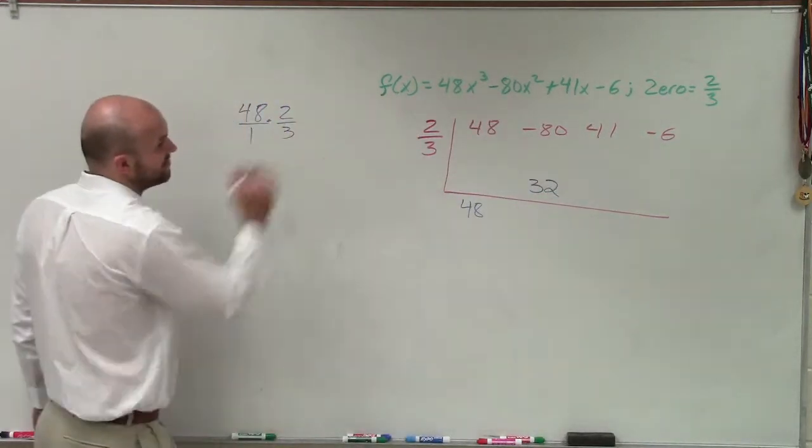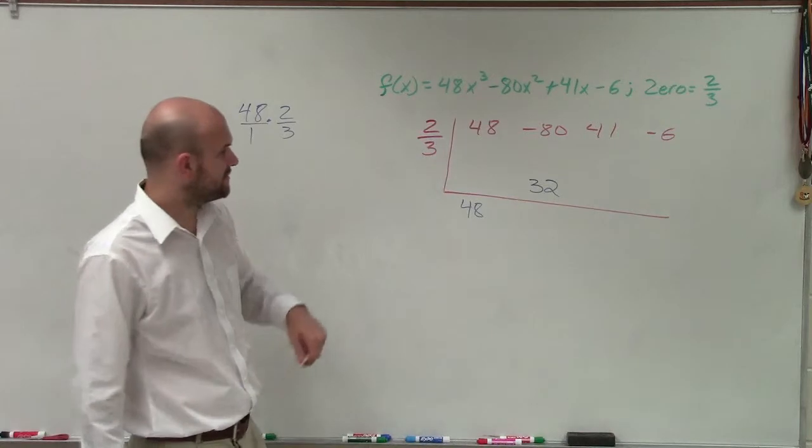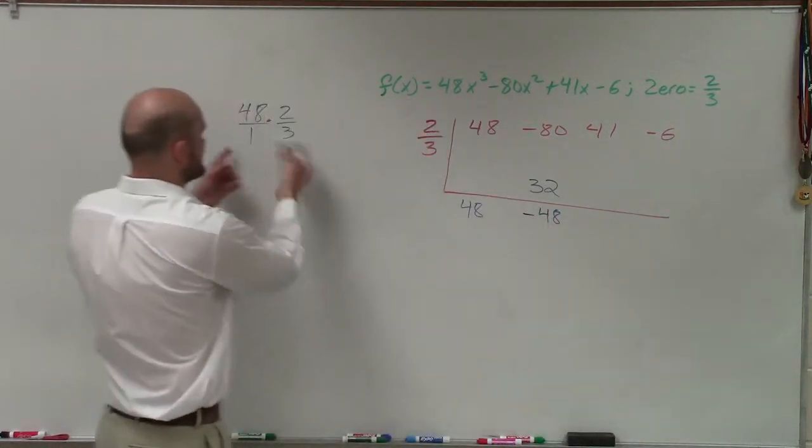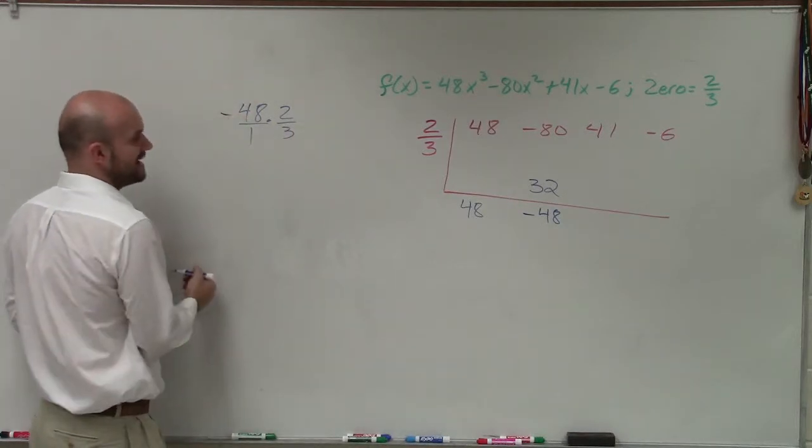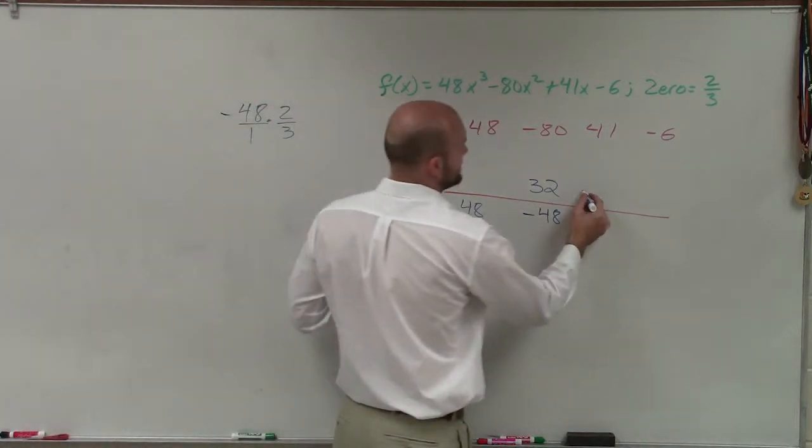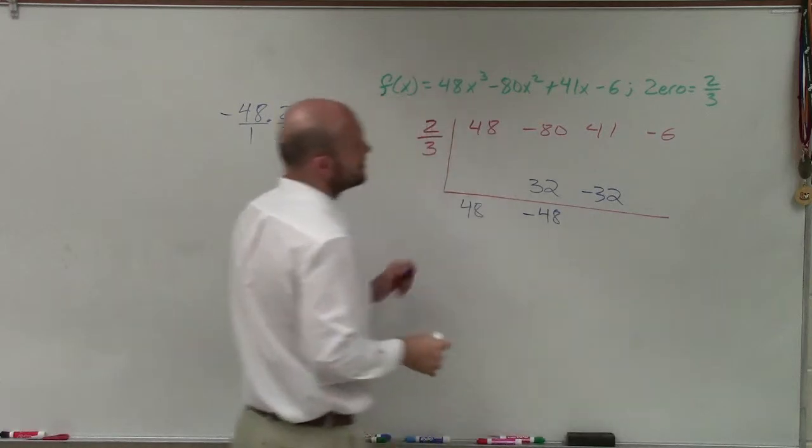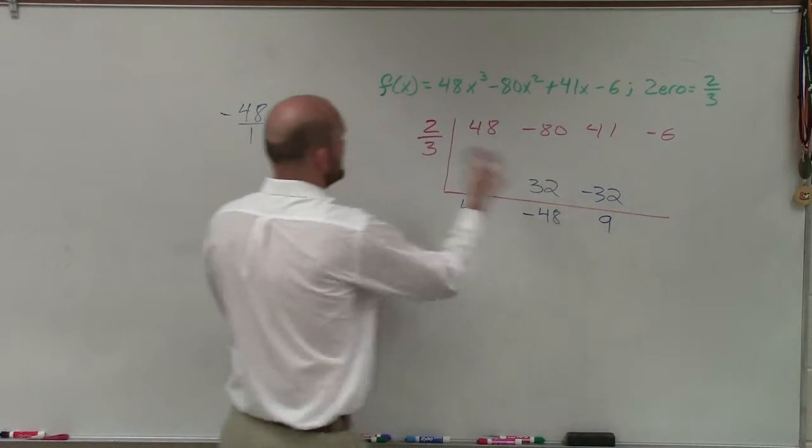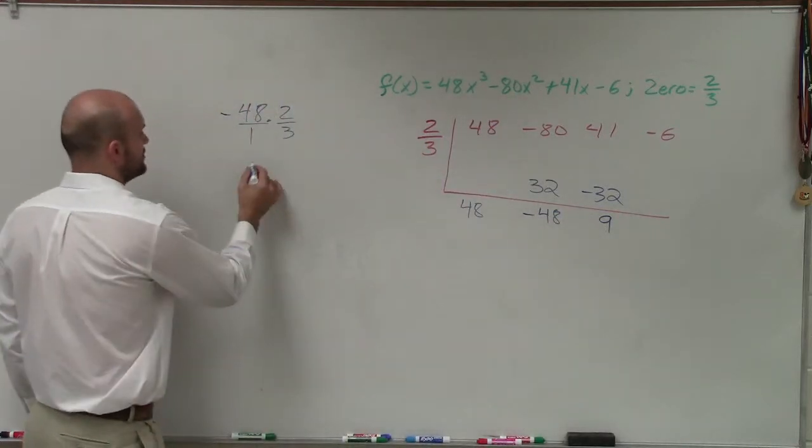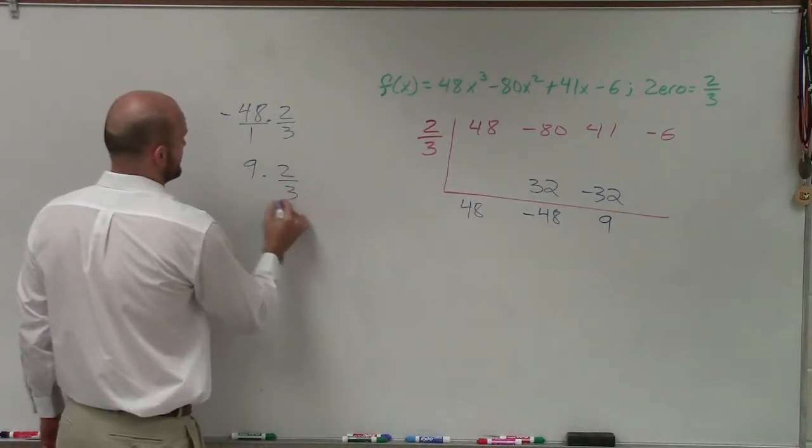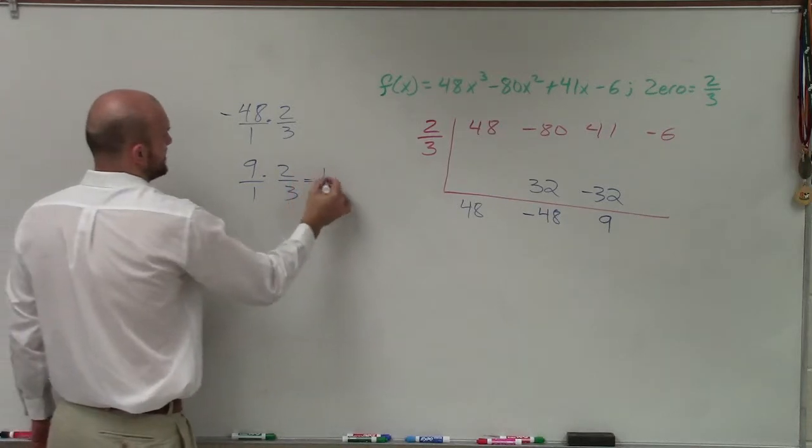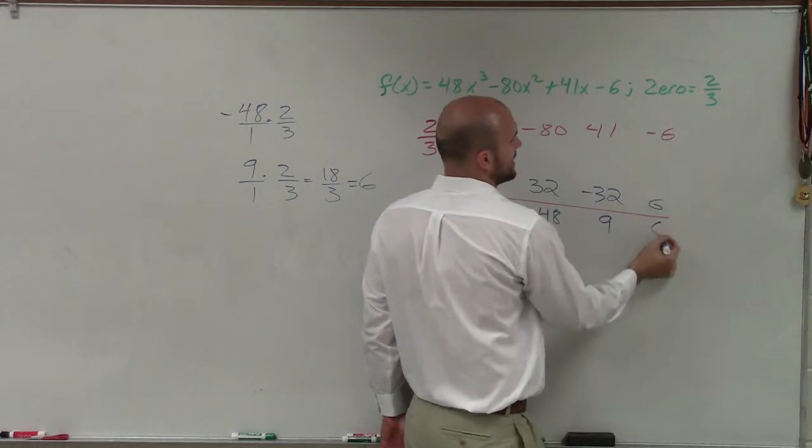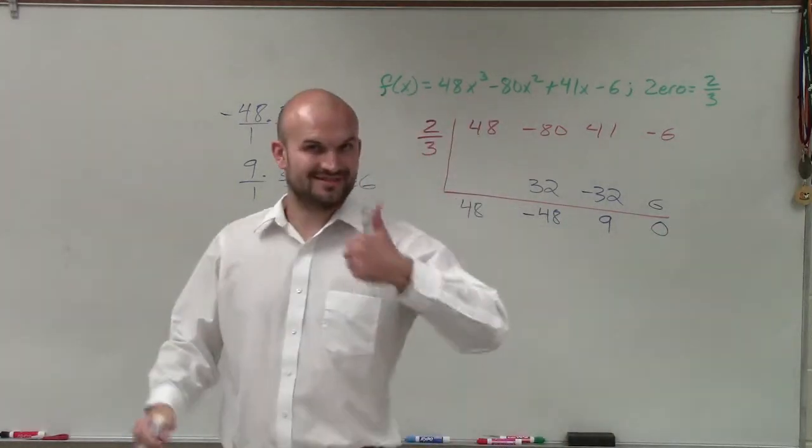So then I have negative 80 plus a positive 32, which is now going to be a negative 48. So now this is going to be the exact same value, but now it's negative, so therefore that will give me a negative 32. Now 41 plus a negative 32 is going to be a positive 9. 9 times 2-thirds, you could do 9 times 2-thirds, multiply across, that would be 18 over 3, which equals 6. So then when I add them up, I get my remainder of 0, which is good, right?